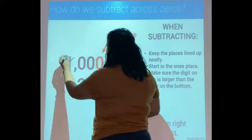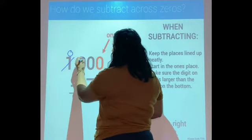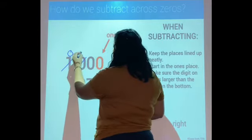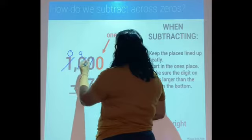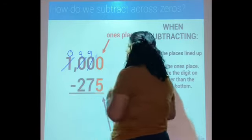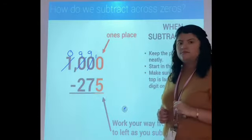This one becomes a zero, this becomes a nine, and this becomes a ten. Does that make sense?